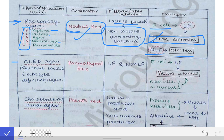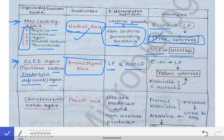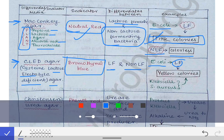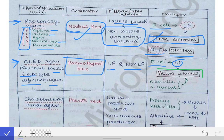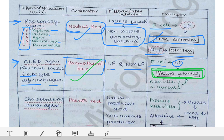The next differential media is CLED agar — Cysteine Lactose Electrolyte Deficient agar. The indicator in CLED agar is bromothymol blue. It also differentiates between lactose fermenting and non-lactose fermenting bacteria. E. coli, being a lactose fermenting bacteria, produces yellow colored colonies on CLED agar. Yellow colored colonies indicate the growth of lactose fermenting bacteria.